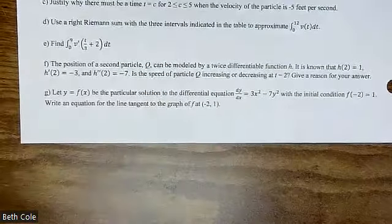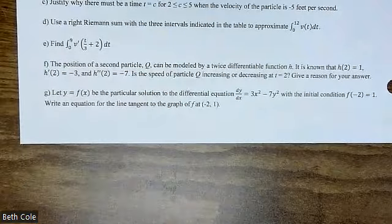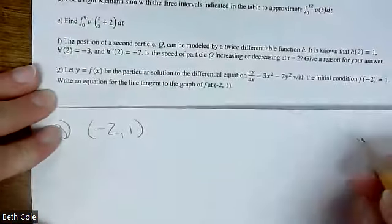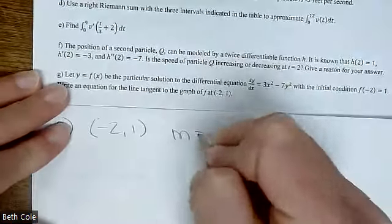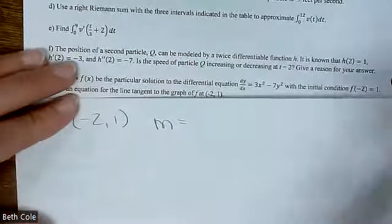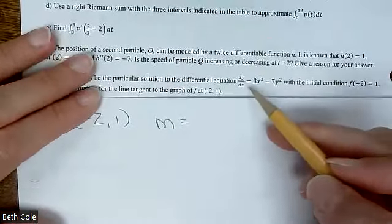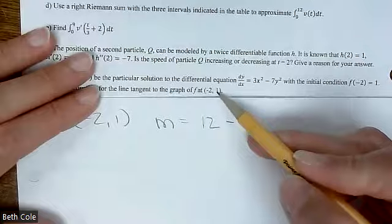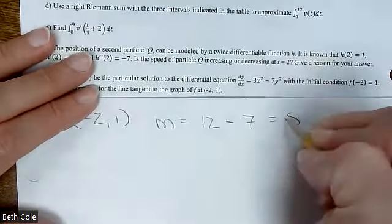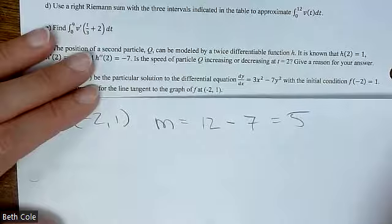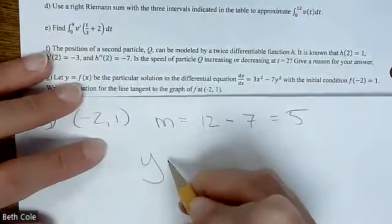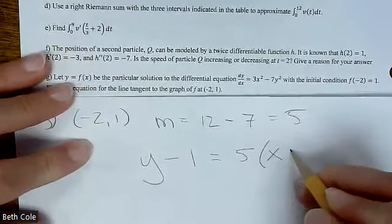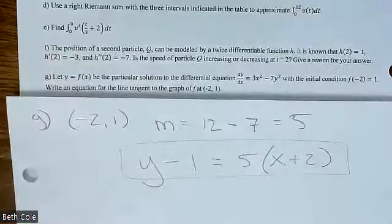Letter G — everyone should have gotten this. You need a point and a slope, and they gave you the whole point: (−2, 1), so you don't even have to plug back in. To get the slope, plug those values into the derivative formula: negative 2 squared is 4, times 3 is 12, minus — plugging in 1 for y gives 7 — so your slope is 5. Then your answer is y minus 1 equals 5 times (x plus 2).